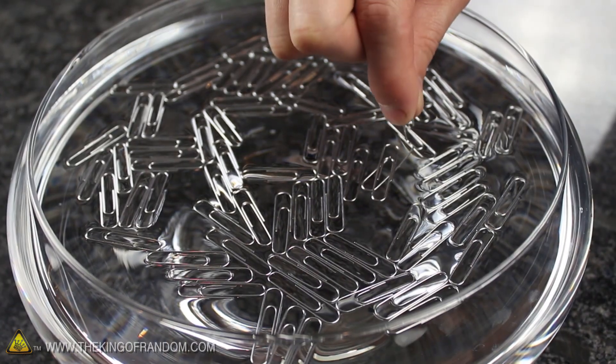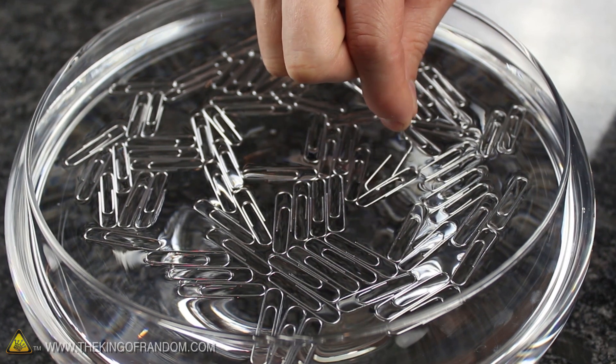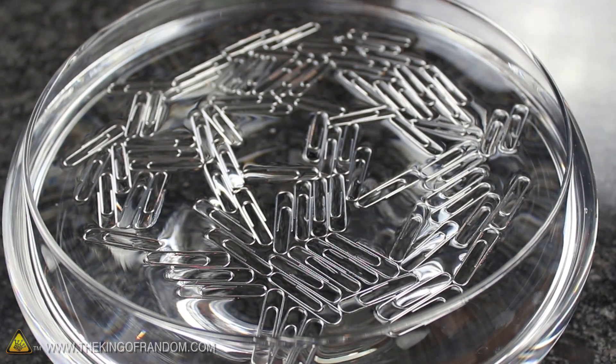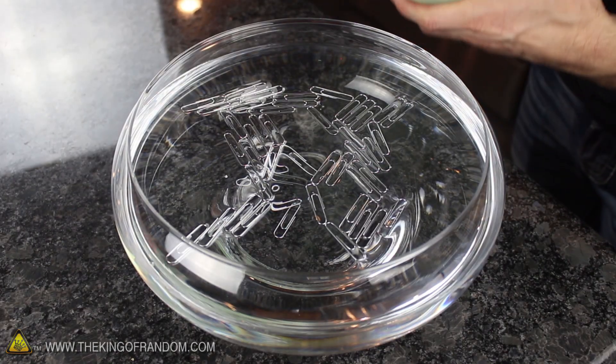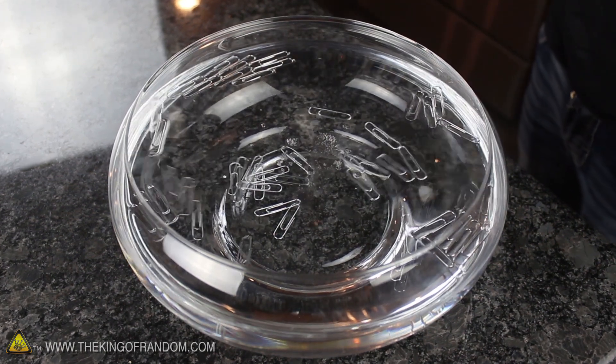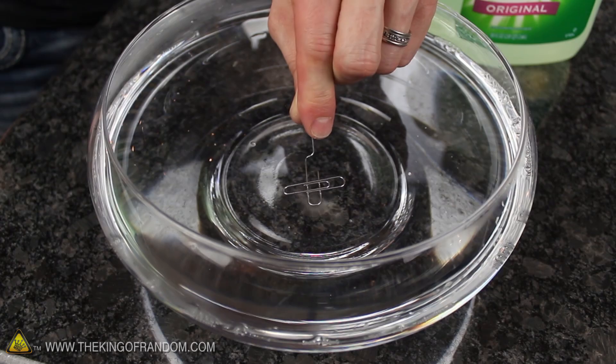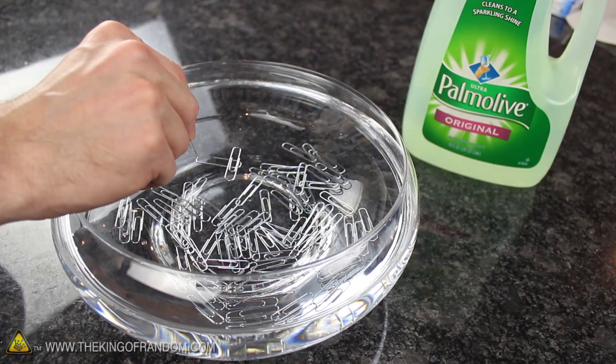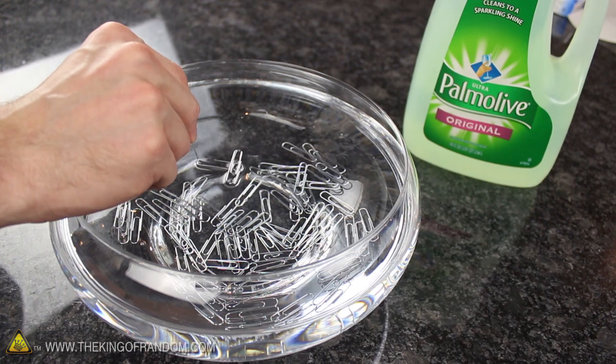Now the idea of floating paper clips isn't new, and some of your friends might think they're smart because they already know how it works. So if you want to mess with their heads a bit, just pour in a few drops of dish soap when they're not looking. Soap breaks up the surface tension of the water and weakens the hydrogen bonds, which means your victim won't be able to get a single paper clip to float, no matter how many times they try or how slowly and carefully the paper clips are set into place.